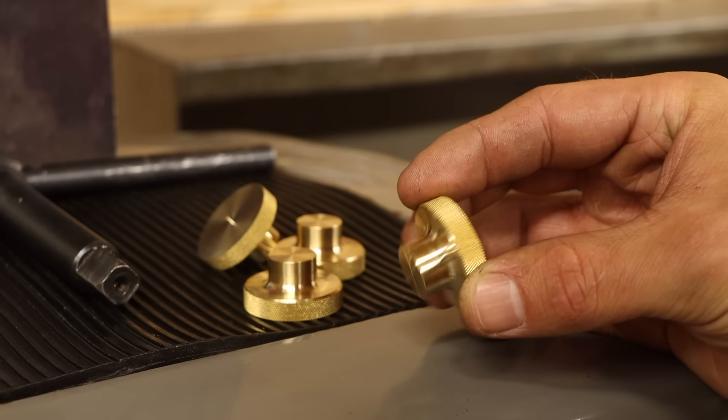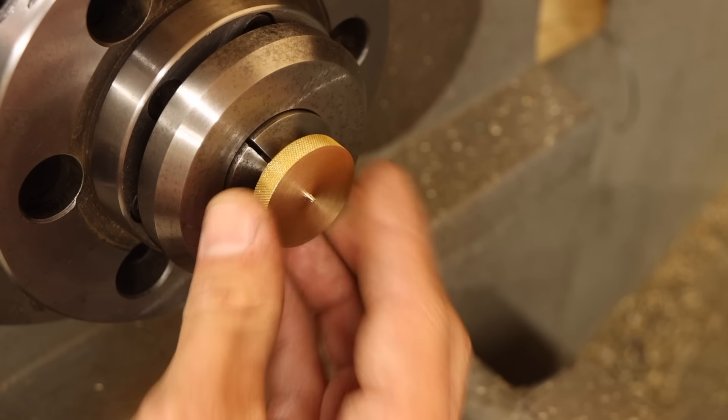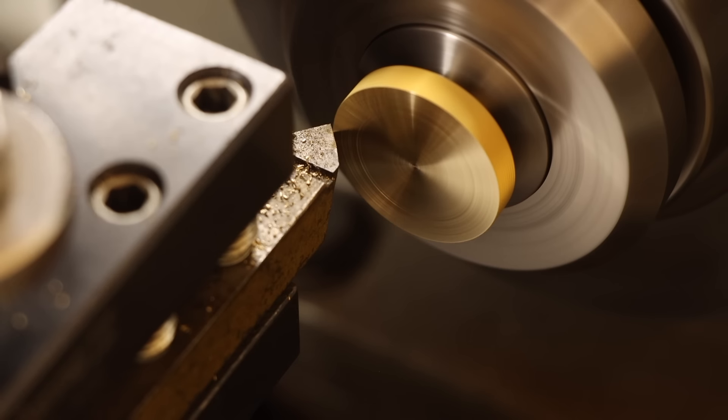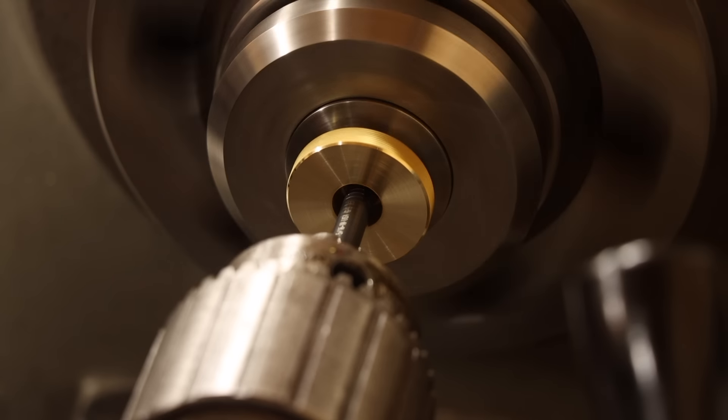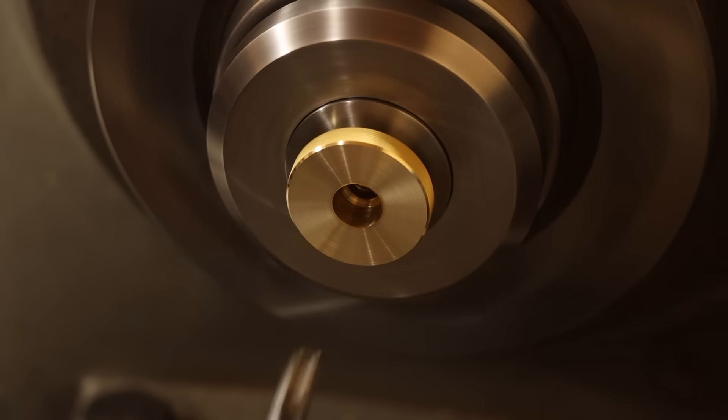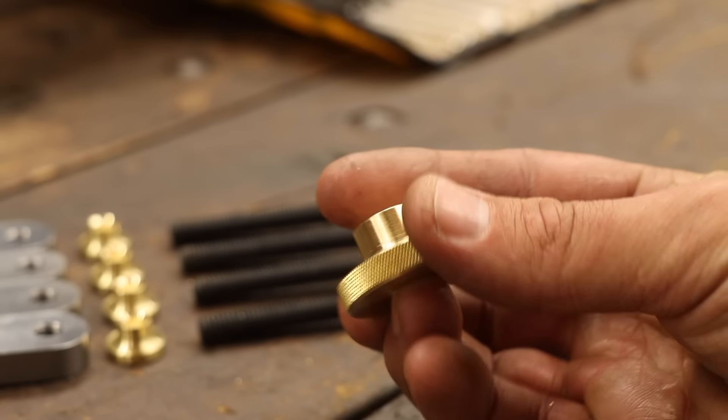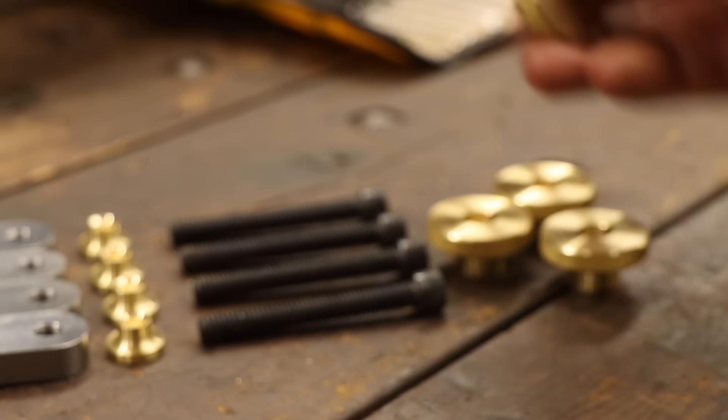These knobs may look ready to go, but I still have a lot more in store for them. For starters, I need to prepare them to be mounted to their screws. So it's back to the collet chuck to face and chamfer the ends. Then I can begin drilling, tapping, and reaming a counterbore in preparation for the screws. Still even more to go for these knobs, but they'll have to take a back seat for a moment while I prepare everything else.